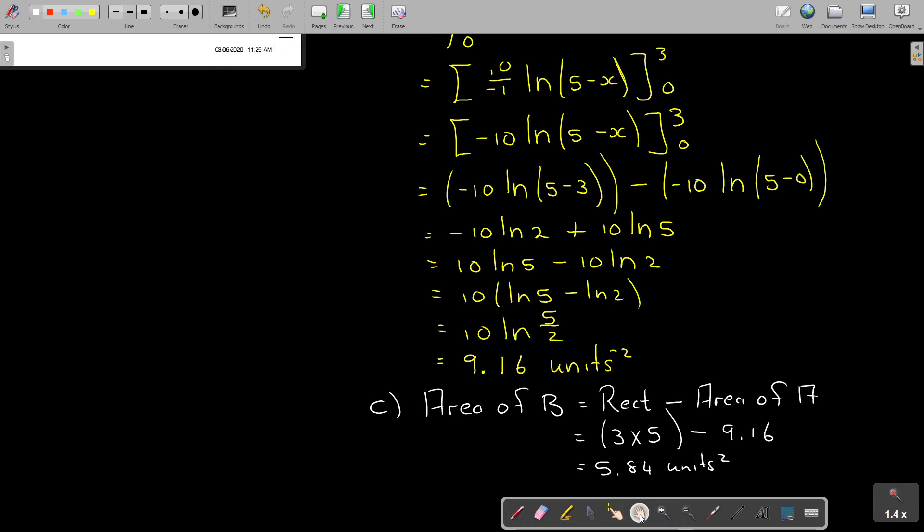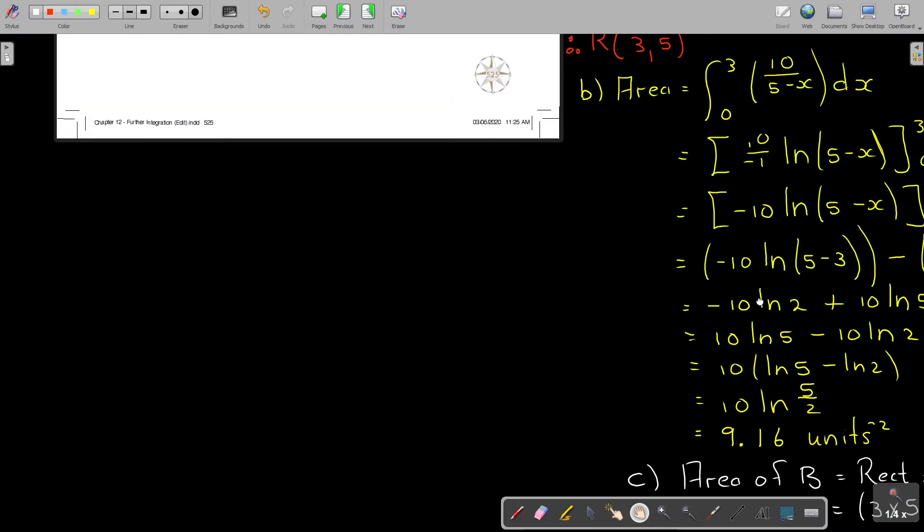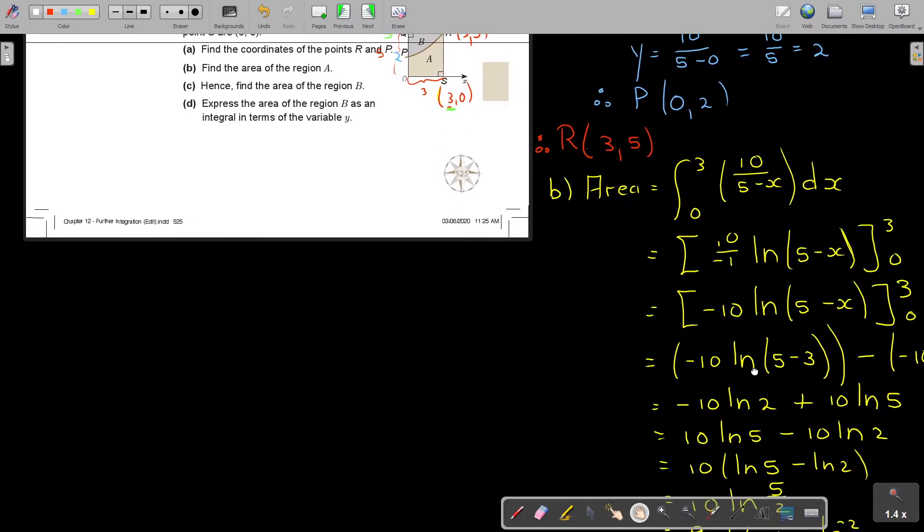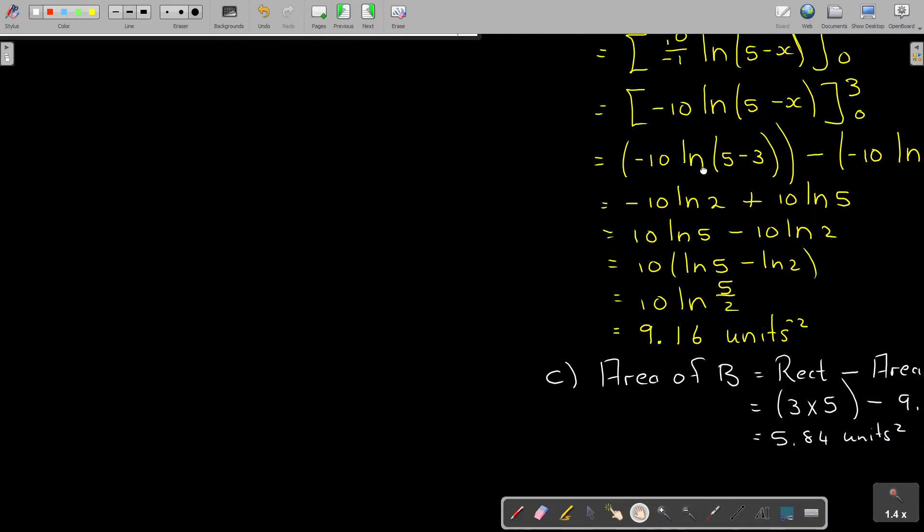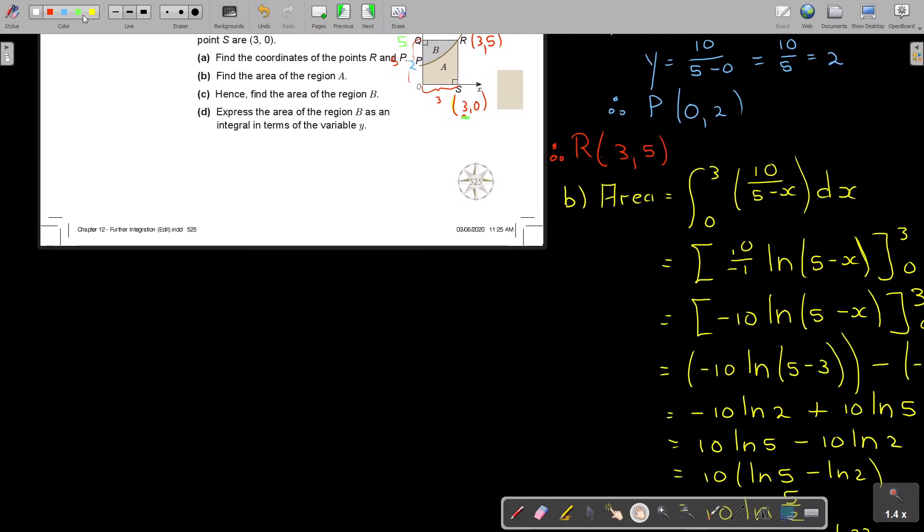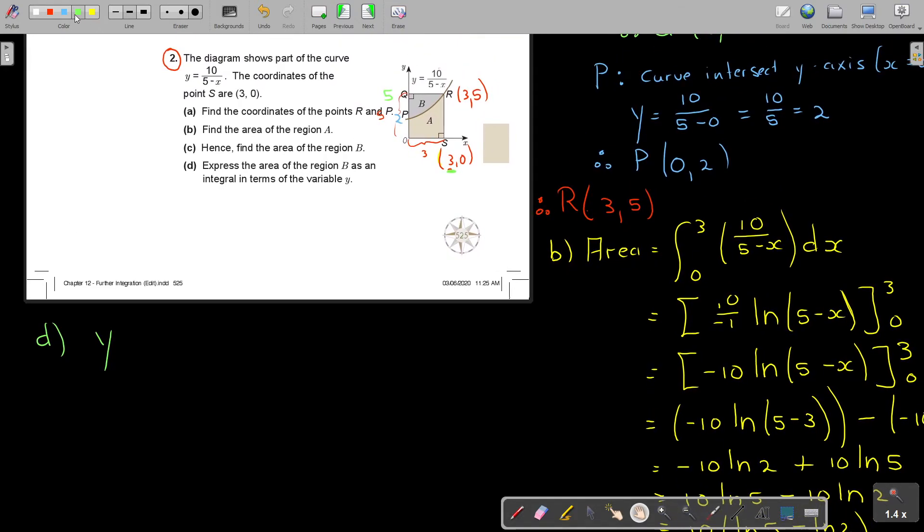Okay. Now, I'm going to look at number C. Now, I'm going to do number C here. Just do not go so high. Okay. That was actually C. That was C. And I'm talking about D. Let's do number D. Express the area of region B as an integral in terms of the variable Y. Okay. Now, again, you have to revise chapter 7. In this case, we went to the X axis. Now, what did we do in chapter 7 if we went to the Y axis? We basically take the equation.